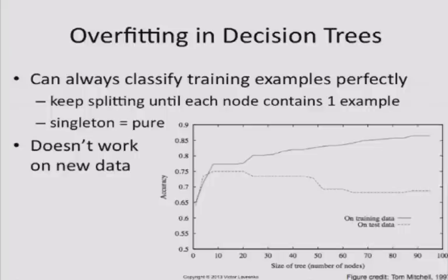What that means is the decision tree will always classify your training examples perfectly — always. Remember in the last lecture we talked about Naive Bayes and the mistake that it made. We had a training example where Naive Bayes, after training, classified it in the exact opposite class from what its label was. That happens with Naive Bayes and lots of other classifiers. It will never happen with decision trees, because decision trees will keep splitting until the accuracy is 100%.